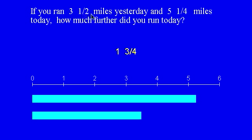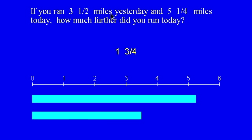If you ran three miles yesterday and five miles more — or five miles further — today, how far did you run today? Three miles yesterday and five miles more today is a total of eight miles, and that's an addition problem. So if the comparative word is in the question, it's probably subtraction. But if it's in the information part, it may not be. You need to read the problem carefully, and it may help to draw diagrams.